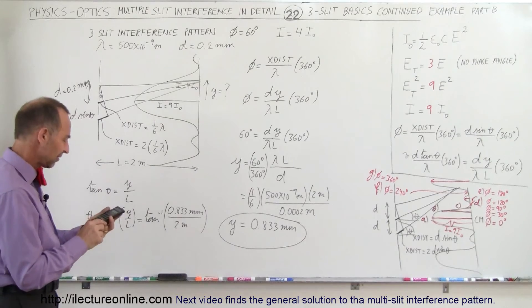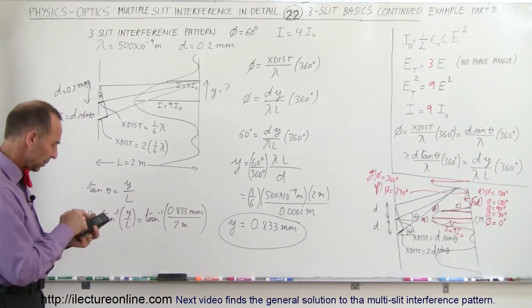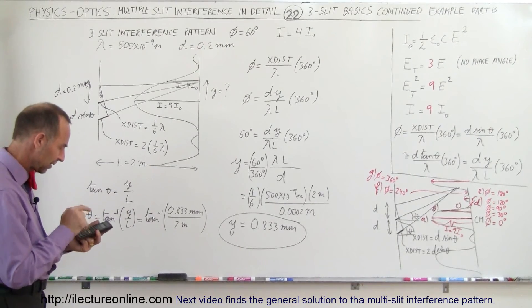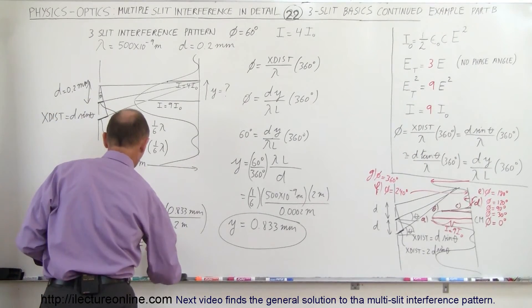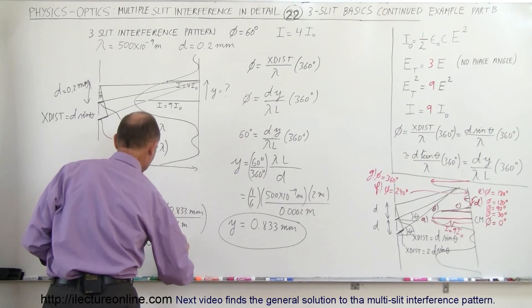Let's do that. So we take that and divide that by 2, and we take the arc tangent of that, and we get 0.0239, so that would be equal to 0.0239 degrees.